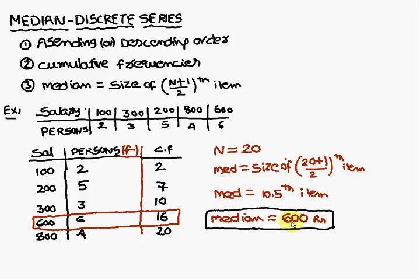That is the way you have to find out the median for a discrete series. So here you have to remember 2, 3 things. The salaries you have to write in terms of the ascending order. Next, finding the cumulative frequencies. Next one, this 10.5 you have to look for in the cumulative frequency column only.